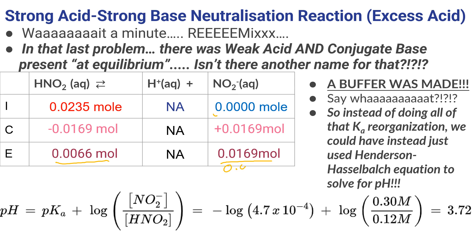Rather than doing all that Ka math — dividing by 0.0557 twice and plugging into the Ka statement — if you appreciate that you now have a weak acid and its conjugate base and you've created a buffer, you can take those concentrations and plug them into the Henderson-Hasselbalch equation to save a lot of obnoxious math.